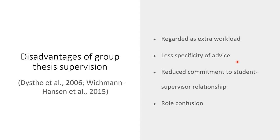The second disadvantage is that now supervisors have to supervise a group of students, and since every student has a different topic, the supervisor cannot cater to everyone's individual needs — their advice will be at a higher, more generic level rather than specific. The third disadvantage is reduced commitment to the student-supervisor relationship, because in circles or group supervision, peer learning, peer review, and peer feedback have more focus than supervisor review and supervisor feedback, which means the commitment to the student-supervisor relationship is lower.